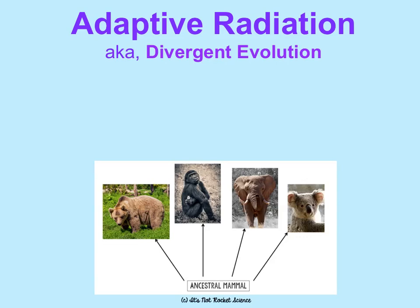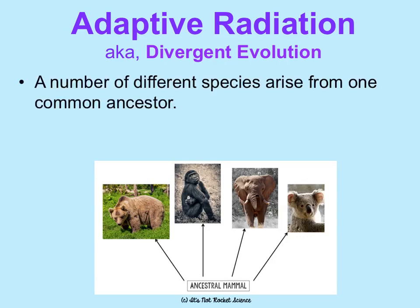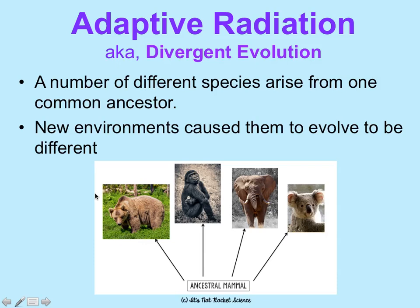Adaptive radiation is also known as divergent evolution. This is when a number of different species arise from one common ancestor, and they usually diverge because they live in new or different environments that they have to evolve to survive in. For instance, this bear, gorilla, elephant, and koala bear are all mammals believed to have evolved from some ancestral mammal millions of years ago. But because they all live in unique environments, they evolved to suit those environments and became so different that they became different species.